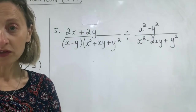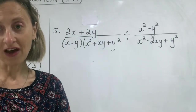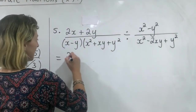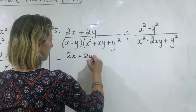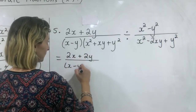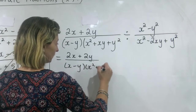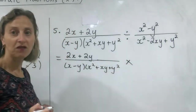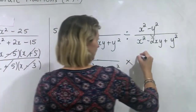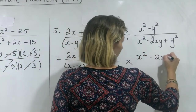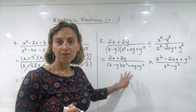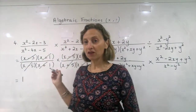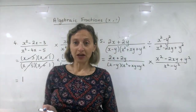When you divide, you change it to a times and flip the second fraction upside down. I'll do that first and then start the question — factorise it, cancel, and see what I'm left with. All I want to do now is change the divide to a times and flip the second fraction upside down. What I have done is made this division question a multiplication, which is exactly what we did in question number one.